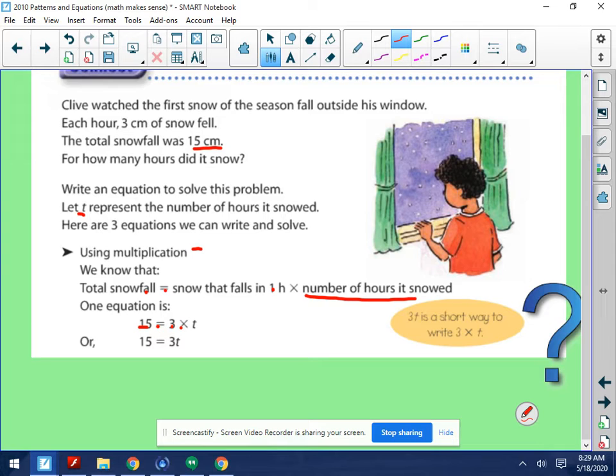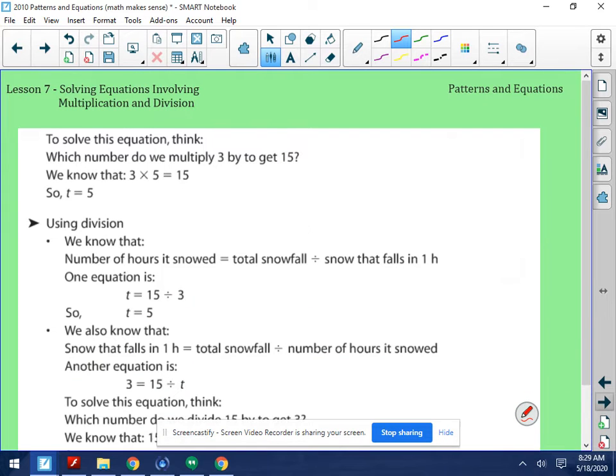Or, when we're multiplying, we can just put the variable right beside the letter, 3T. 3T is the same as 3 times T. Okay? So here's that being explained over there. That's one equation. To solve this equation, we think, which number do we multiply 3 by to get 15? We know that 3 times 5 is 15, so T has to equal 5.